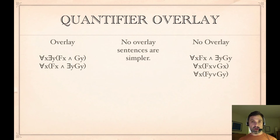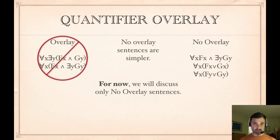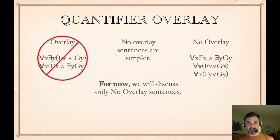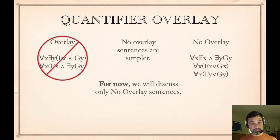No-overlay sentences are much simpler to understand than overlay sentences. While our language allows overlay sentences — they are perfectly grammatical and have perfectly fine meanings — they're hard to understand. In symbolization, the best symbolization of a sentence at this point will never have any overlay in it. So while overlay sentences are perfectly grammatical, we're going to ignore them for now because they would not be produced by a good symbolization of any of the sentences we're going to be working on. Bear in mind that if you produce a symbolization that does have quantifier overlay, you've probably made a mistake.